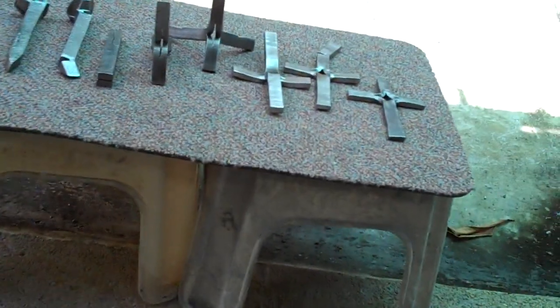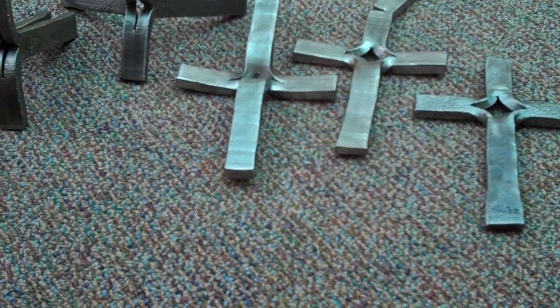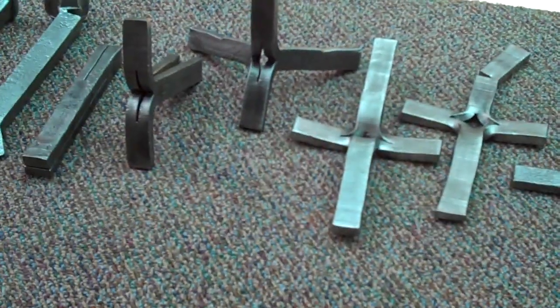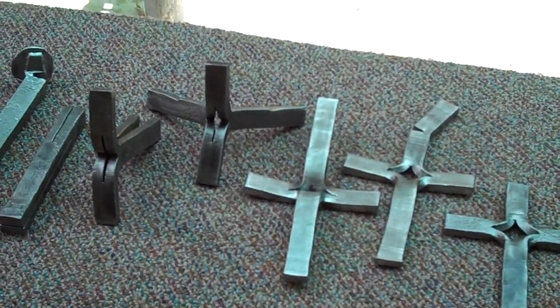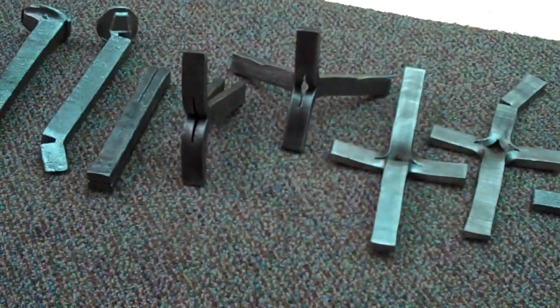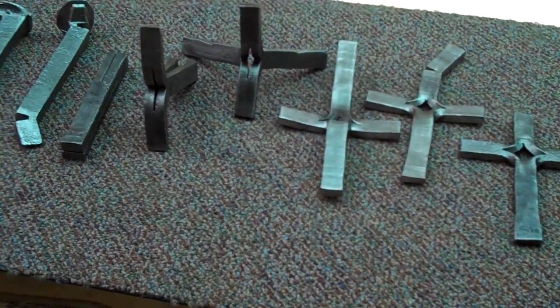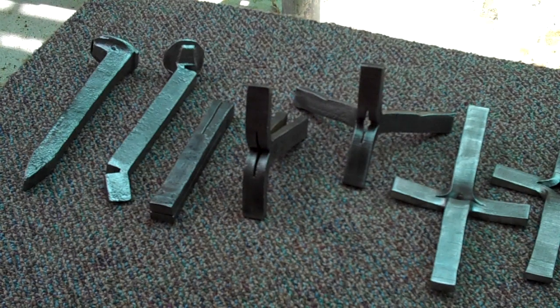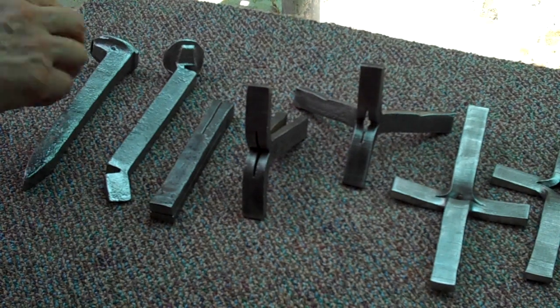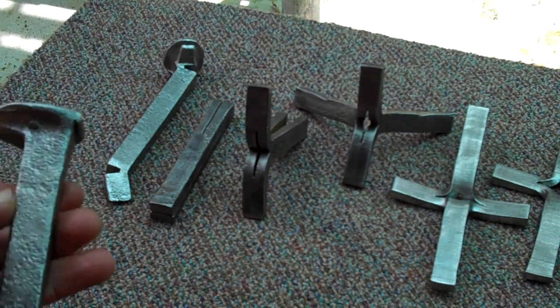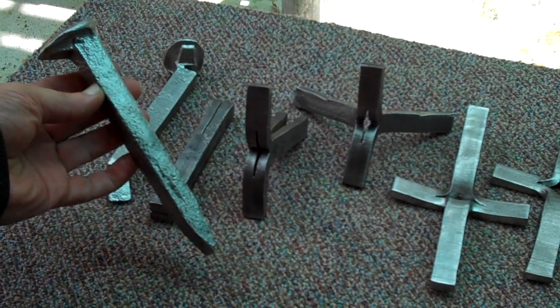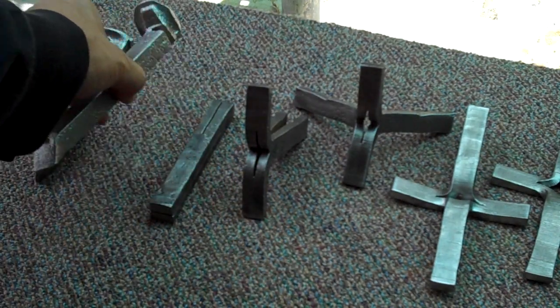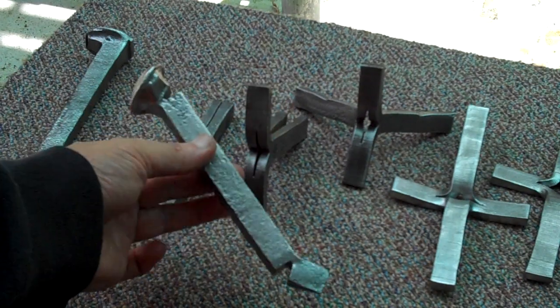Now, do you remember everything that we did? Let's see if you remember. Okay, so the first thing that we did was we started out with a railroad spike. Remember? And the next thing that we did was we cut the ends off.